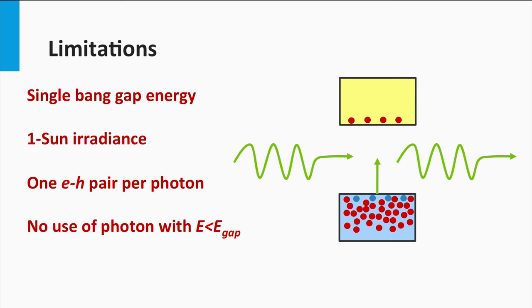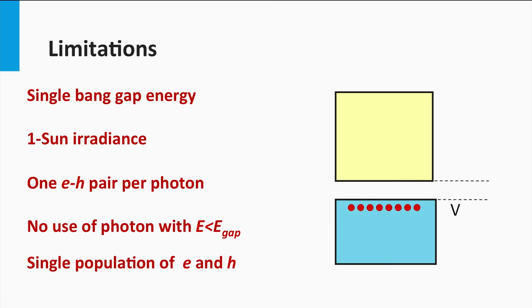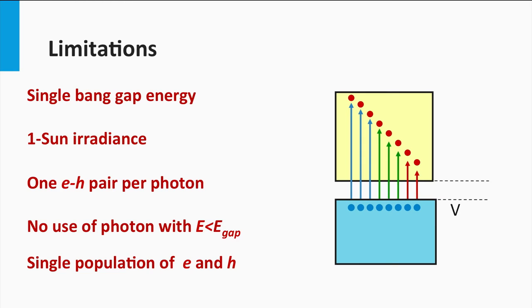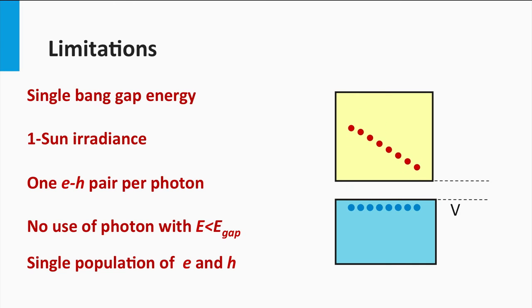Fourthly, the photons below the bandgap are not used — they do not result in charge carrier excitation. Finally, the charge carriers populate single energy levels. Light absorption excites electrons and holes up into the conduction or down into the valence band. However, the charge carriers relax very fast: the electron to the bottom of the conduction band and the hole to the top of the valence band. The potential difference between the charge carriers right after the excitation is not utilized. In addition, in the band there are no states, so the light below the bandgap does not excite any charge carriers.